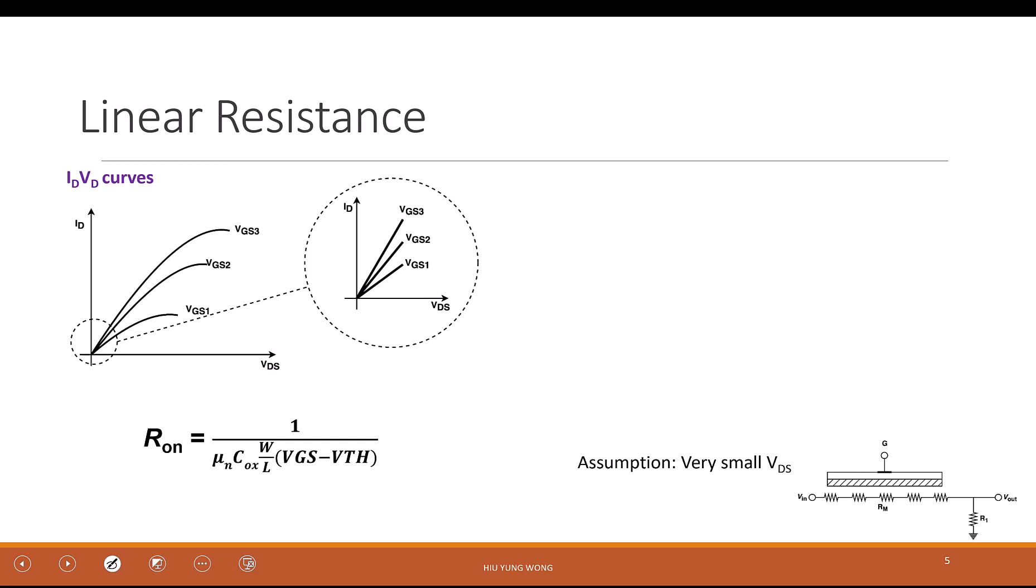So what does it mean? You talk about triode region, right? Let me copy the equation from the last page. I equal to W over L, mu C_ox, Vgs minus Vt, Vds minus Vds squared over two.